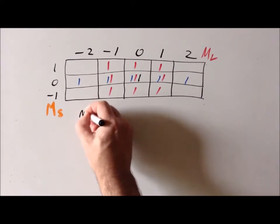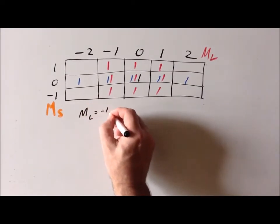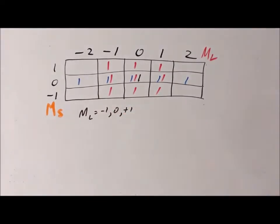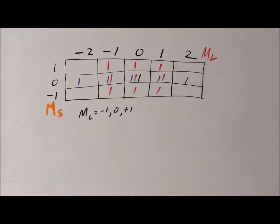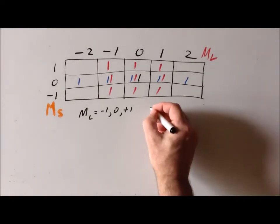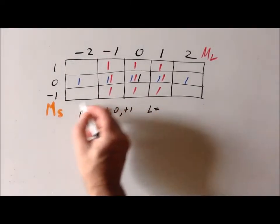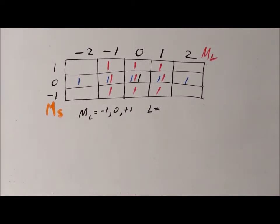Big M sub L equals minus one to zero to plus one. We're quite used to going from L to M sub L when working with atomic symbols, so we need a little practice going in the reverse direction. We recall that if we had a small L value equal to one, the possible small M sub L values would go from minus one to zero to plus one. With capital L it works exactly the same way, so this combination of M sub L values is only possible for a big L value of L equals one, because the M sub L values go from minus L to plus L.